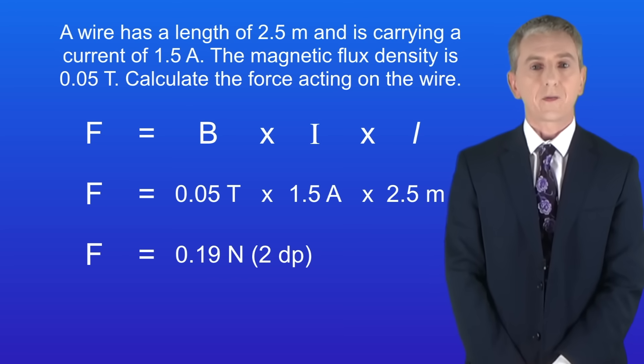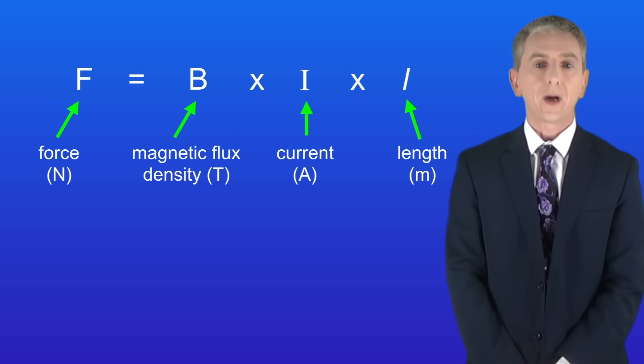Now in the exam you could be asked to name the factors that affect the size of the force. Looking again at the equation we can see that the force depends on three factors: the magnetic flux density, the current, and the length of the conductor.